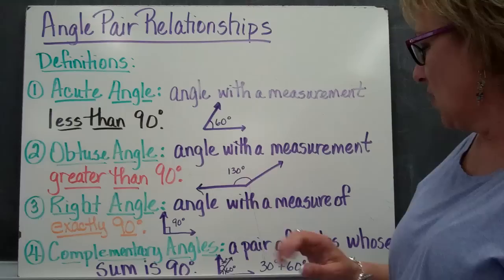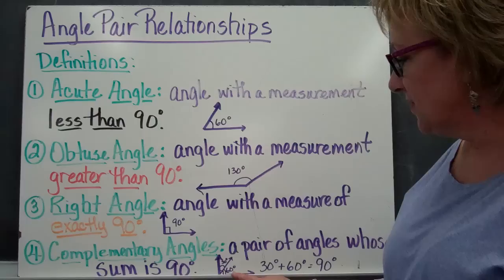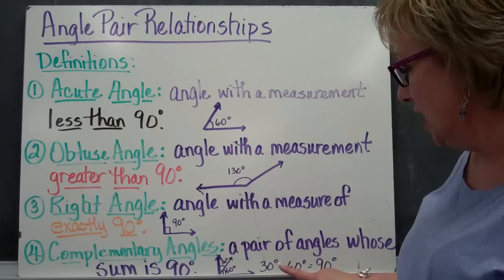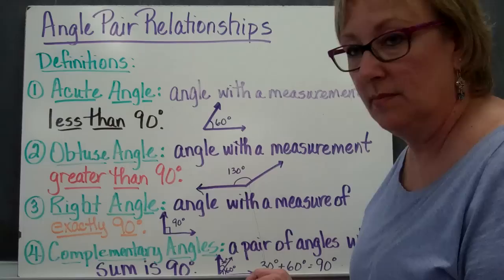Complementary angles are a pair of angles whose sum is 90 degrees. So if I have two angles like this — you can barely see my little 90-degree box there — but if this is 60 and this is 30, then 30 plus 60 will give me 90 degrees. So when I add them together, complementary angles side by side are going to be 90 degrees.